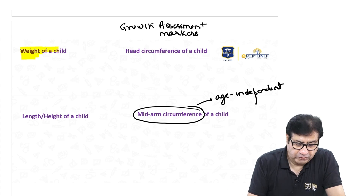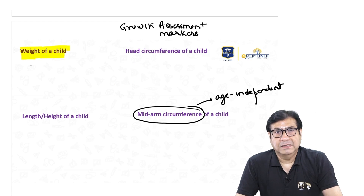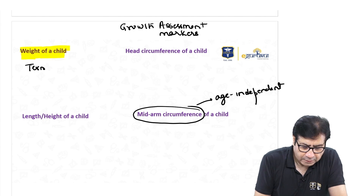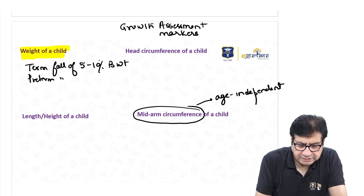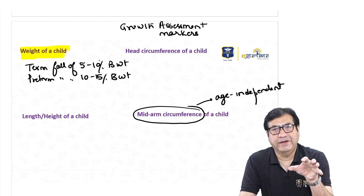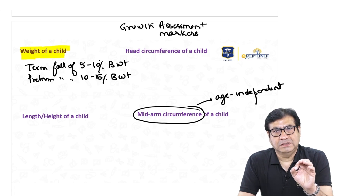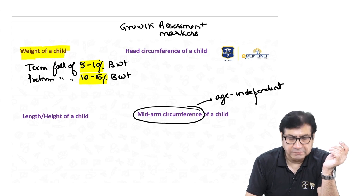Let us talk about the weight of the child. The child's birth weight does not start increasing from the first day — all newborns experience a fall in weight in the first few days. In term children there is a fall of 5 to 10 percent of the birth weight, and in preterm children there is a fall of 10 to 15 percent of the birth weight. This fall is due to loss of extracellular water.